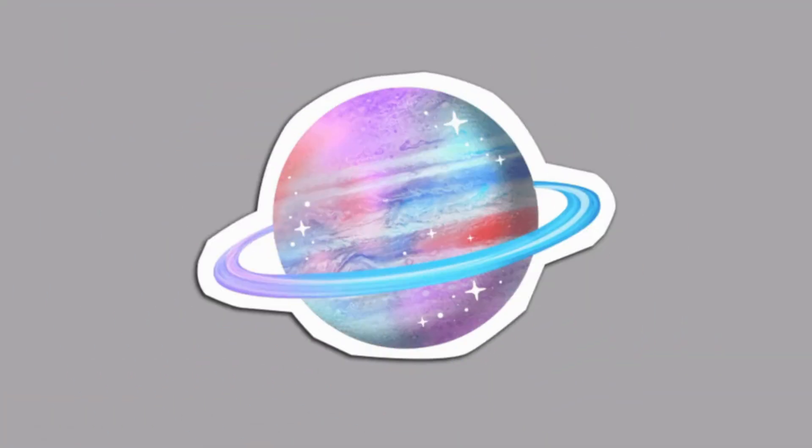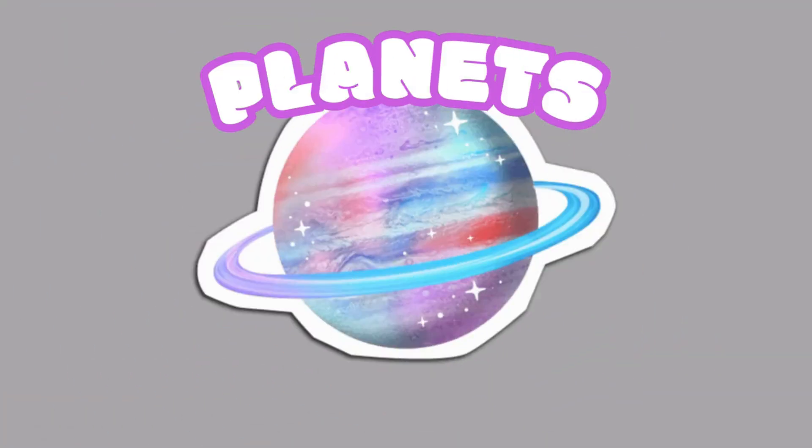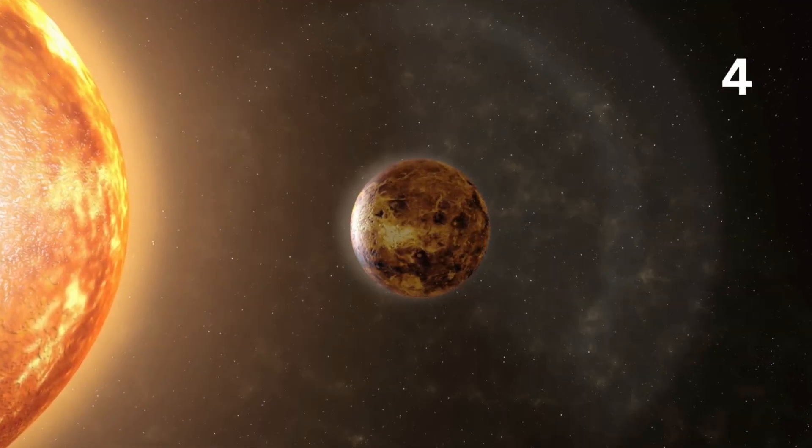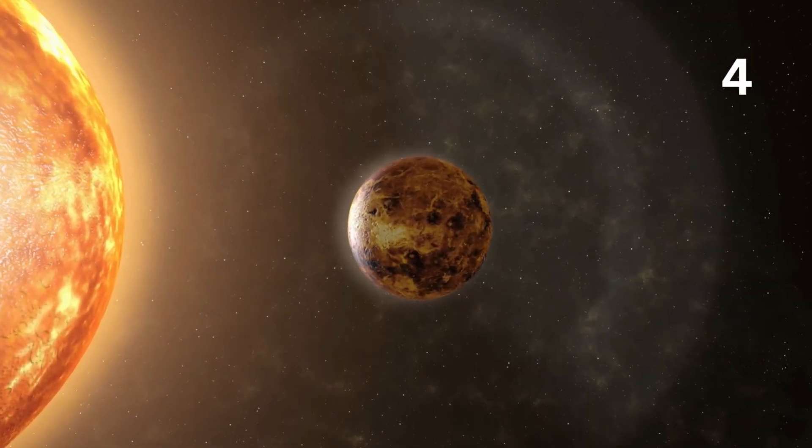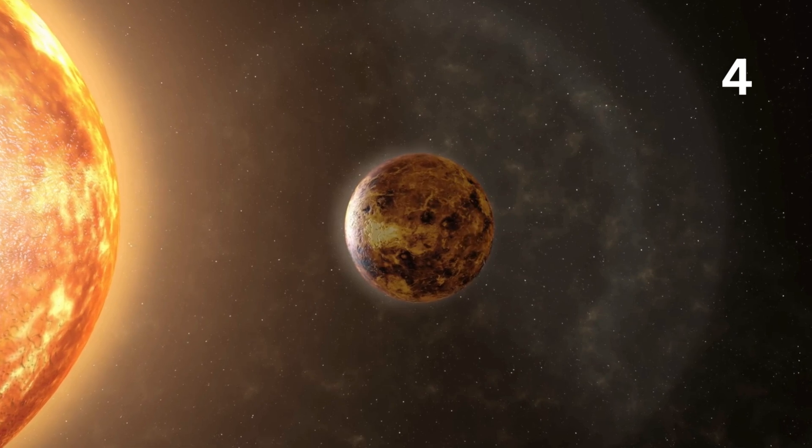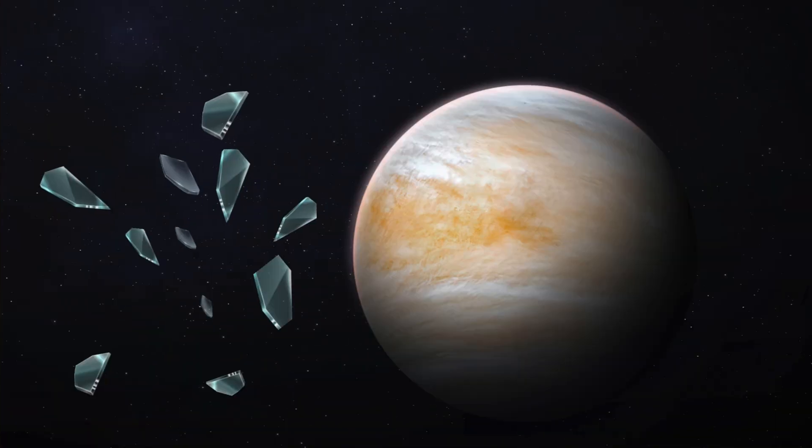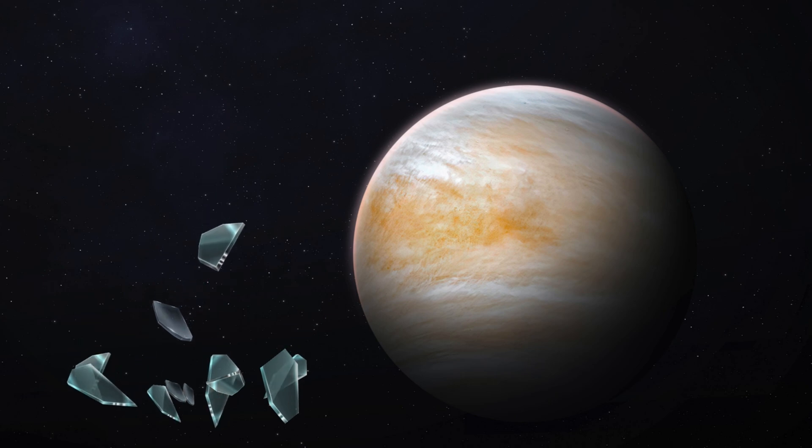Even though Mercury is the closest planet to the Sun, it's not the hottest. Venus is. That's because Mercury doesn't have an atmosphere. But Venus gets so hot, it can snow shards of metal! That's dangerous!